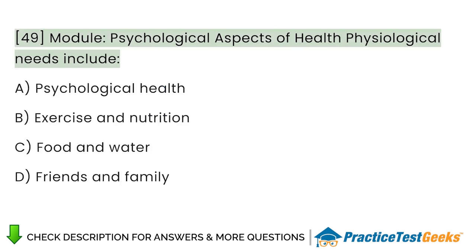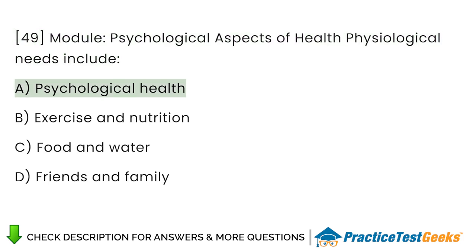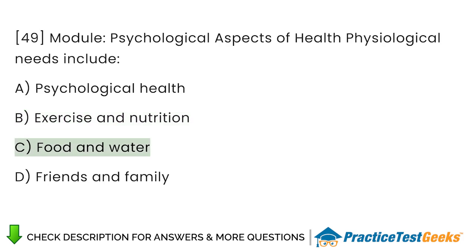Module: Psychological Aspects of Health. Physiological needs include: A. Psychological health. B. Exercise and nutrition. C. Food and water. D. Friends and family.